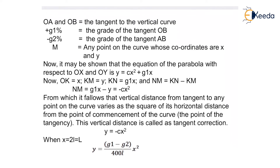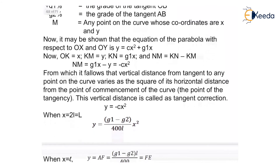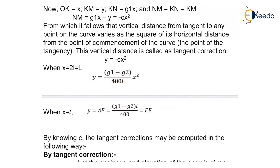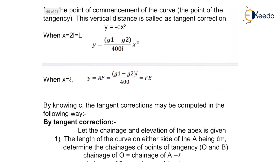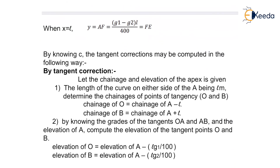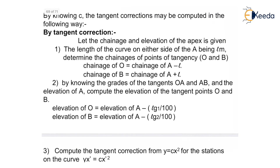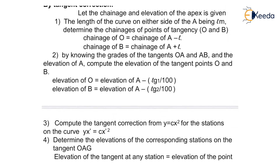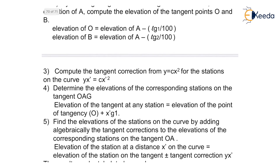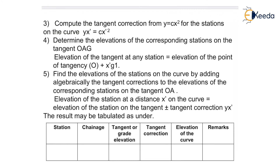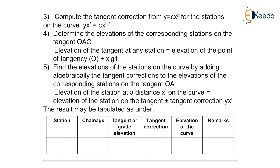The results are tabulated in a table format. We calculate values of Y and the elevation of points O and B, then find the elevation of remaining points. We compute the tangent correction at each point, and from the tangent correction find the elevation of the curve. The tabulation format includes columns for station, chainage, tangent or grade elevation, tangent correction, and the elevation of the curve.